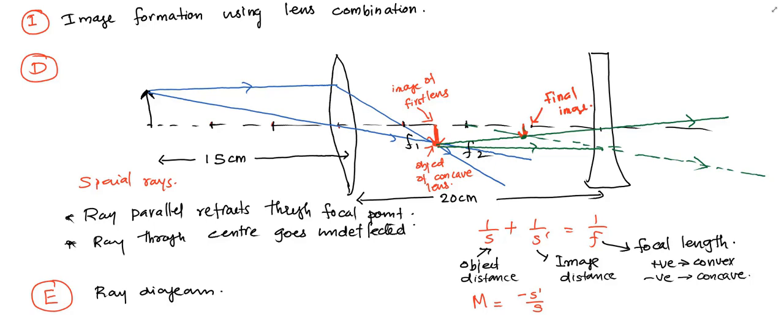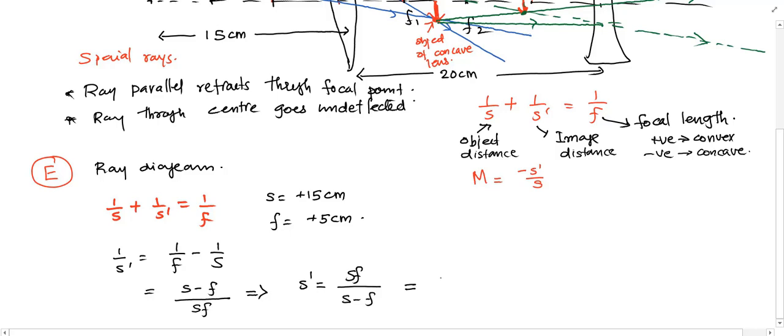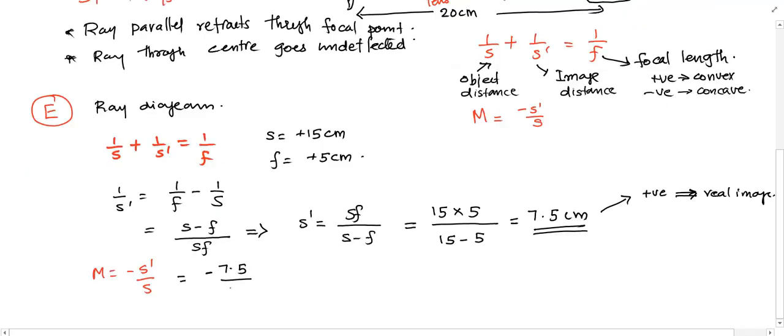We are using the thin lens equation 1/s + 1/s' = 1/f. Here for the first lens s = 15 centimeters and it is positive. As it is a convex lens, the focal length is +5 centimeters. We can rearrange this equation to get s' = sf/(s - f). We can now substitute the values to get s' = 7.5 centimeters. This is a positive number confirming we're getting a real image.